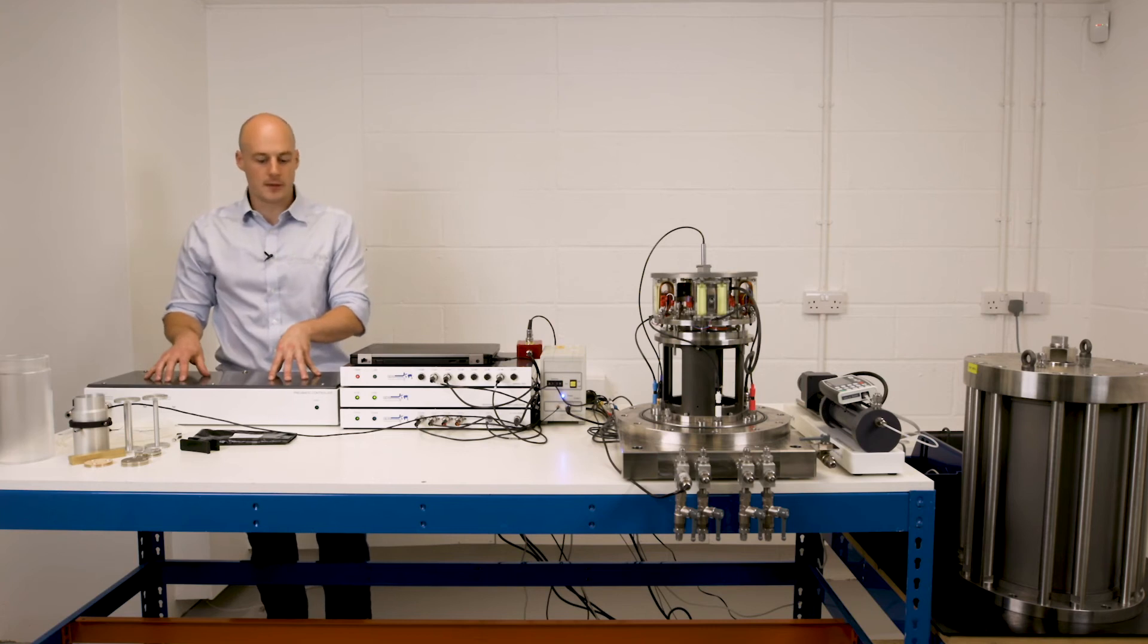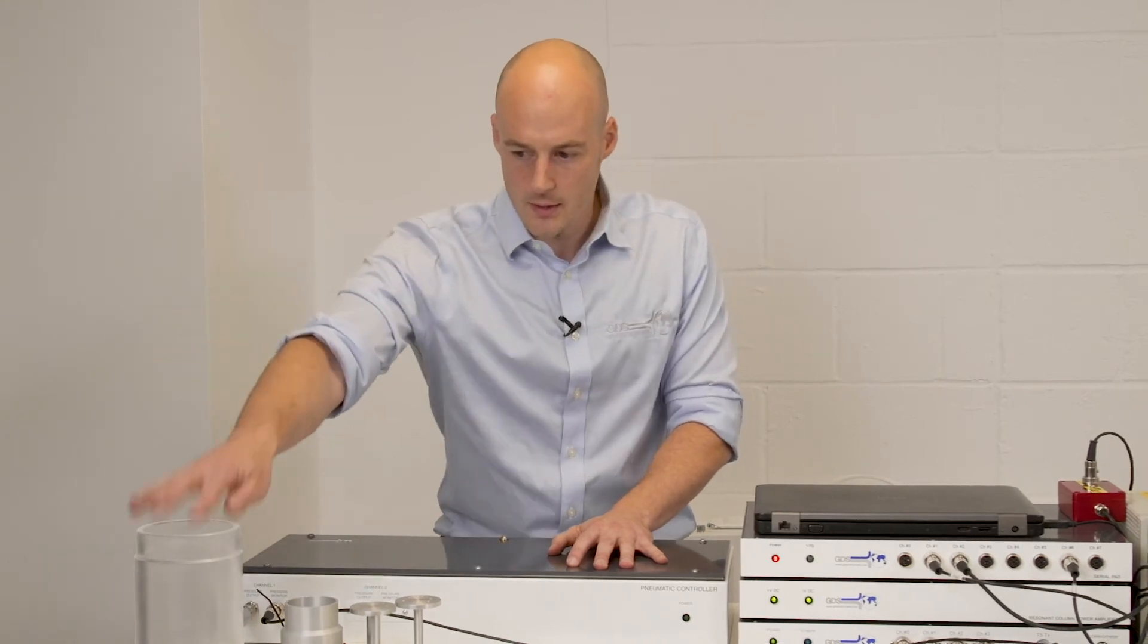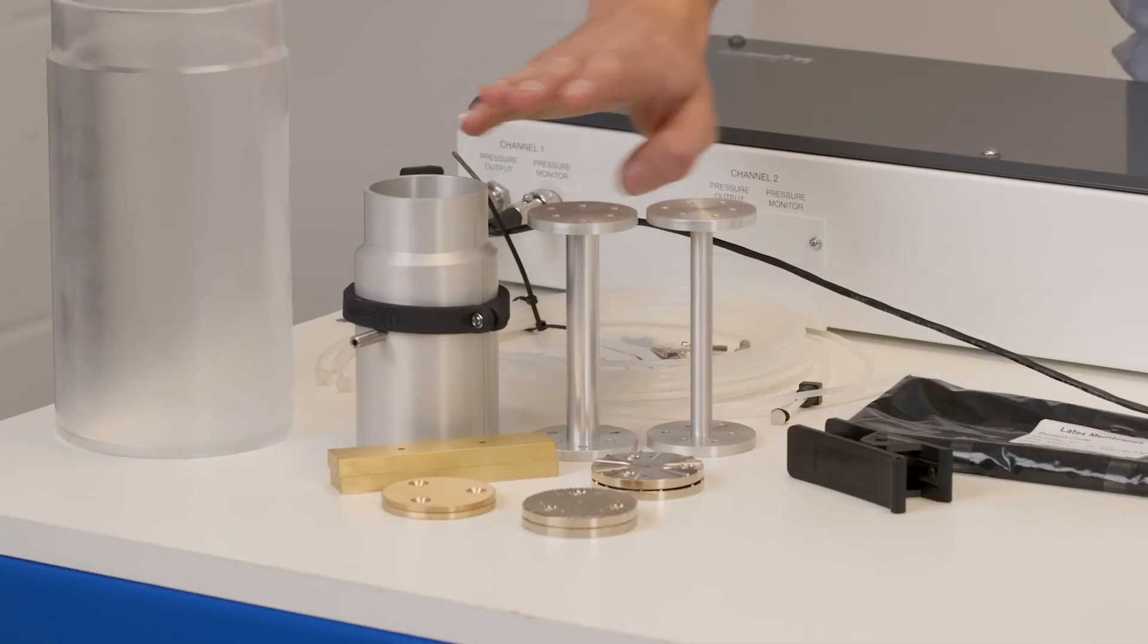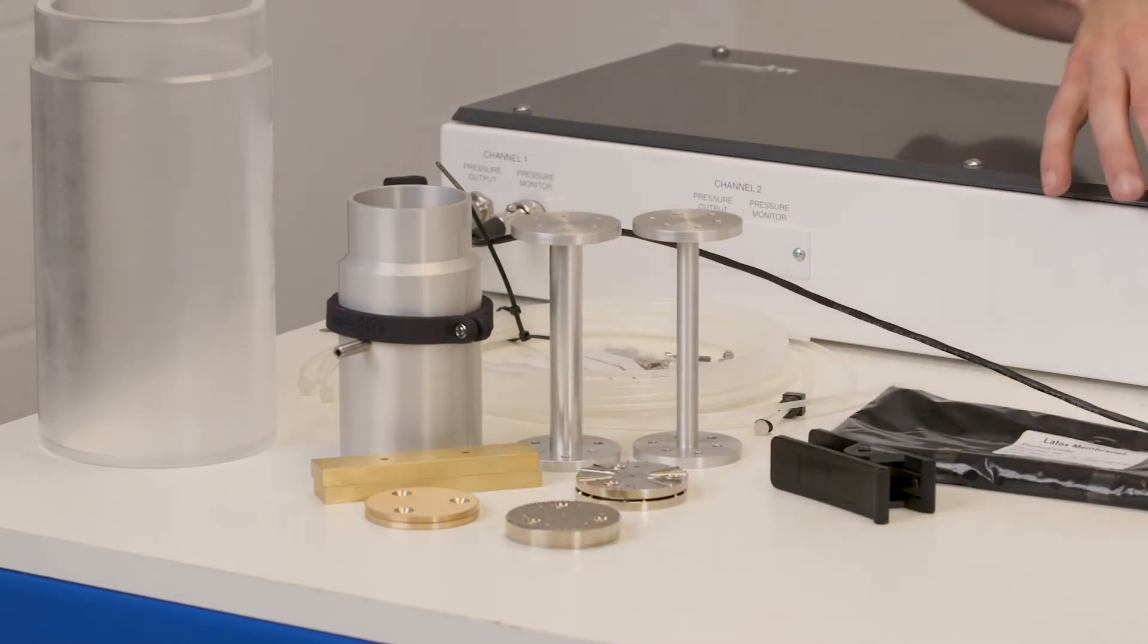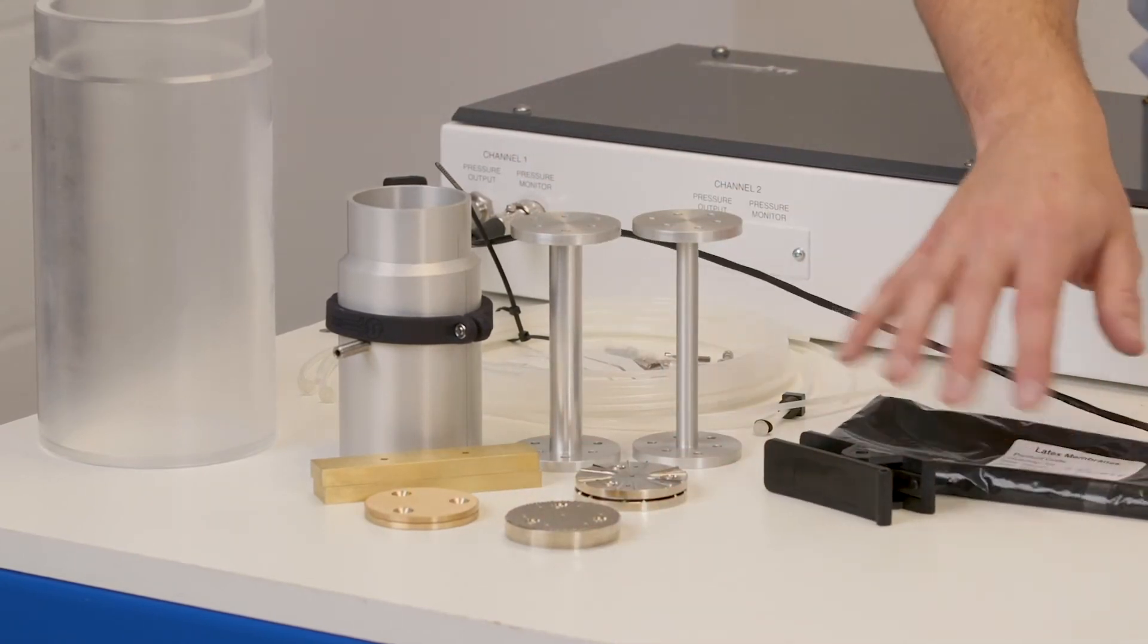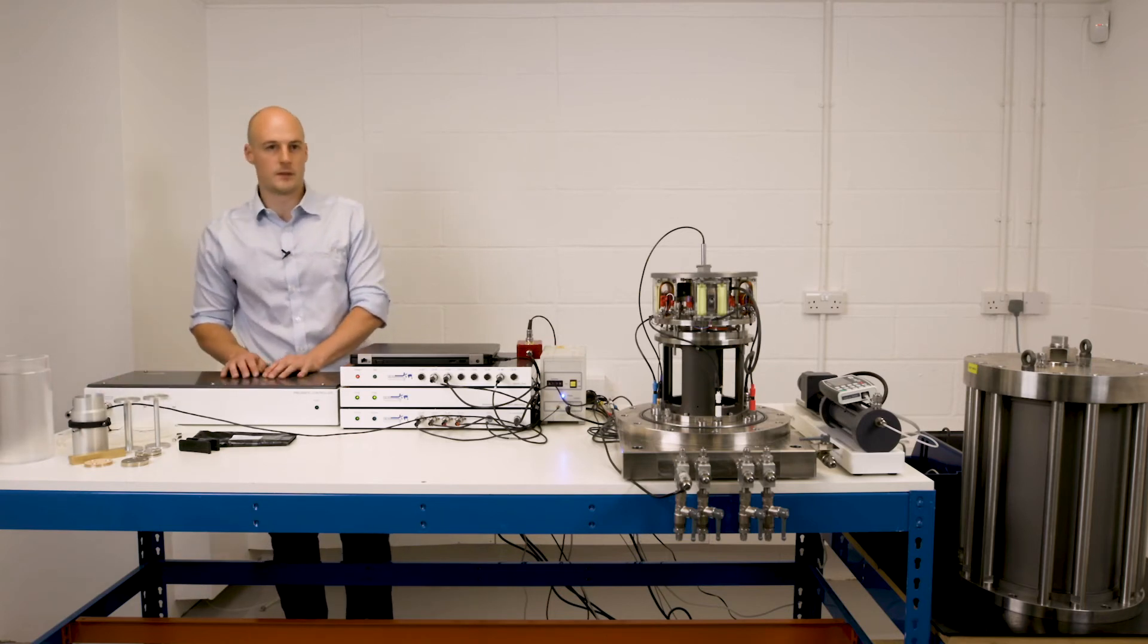Cell pressure is provided by the pneumatic controller here and we have a whole host of accessories that come with the system. The inner cell, sample molds, a full set of calibration setup and a range of porous discs. Membranes, pipes, tubes, fittings all come included with the system.